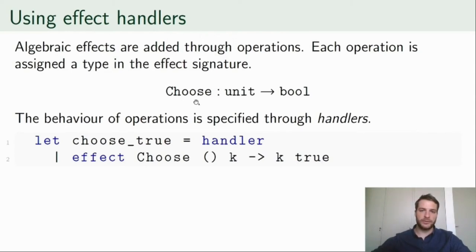For instance, here we have an operation choose that represents a binary choice. It accepts a unit argument and returns a boolean value. The operation itself is only a construct and its behavior is specified by the handler that intercepts the operation call.